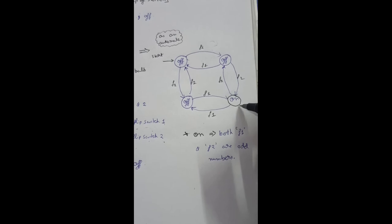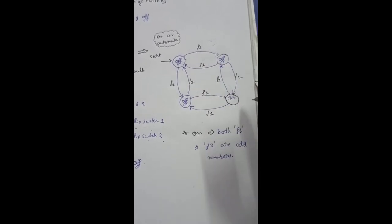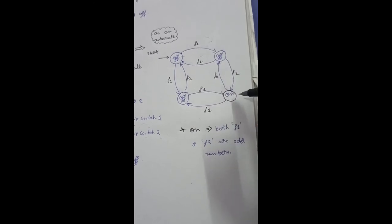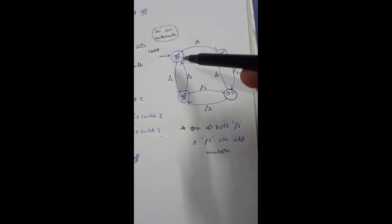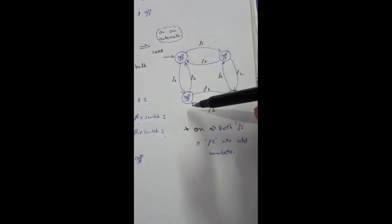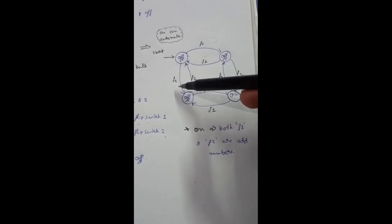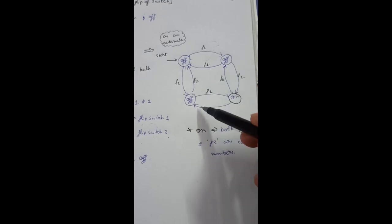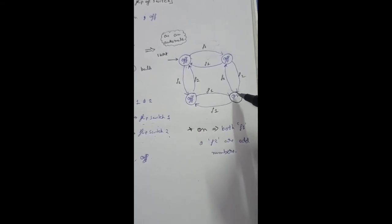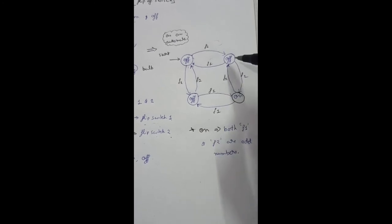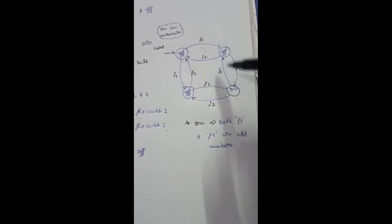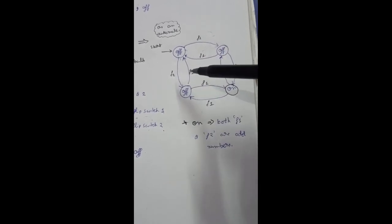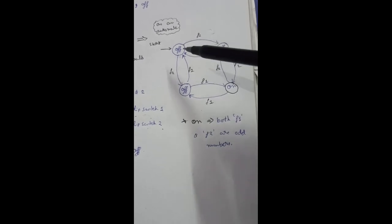If we give f1 and then f2, only then will the system come to the on state — we have to simultaneously perform f1 and f2, turning on switch one and switch two. If we give f1 again, switch one turns off again. Similarly, f2 alone will not make it on; we need to perform both f1 and f2. Any other combination will keep it in the off state. Both f1 and f2 must be performed an odd number of times — if f1 is five times and f2 is four times, it will not be on, since both must be odd.